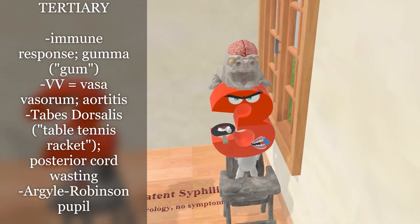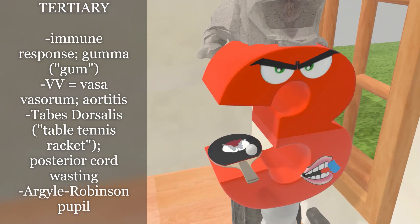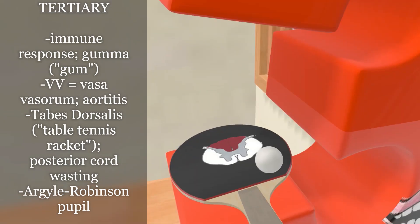In neurosyphilis, spirochetes occupy the back part of the spinal cord, resulting in tabes dorsalis — represented by the table tennis racket. The posterior part of the racket is shaded, reminding us of the wasting or loss of the back of the spinal cord, leading to loss of vibratory sense and proprioception. The spirochetes can also invade capillaries supplying the anterior spinal cord, resulting in general paresis or paralysis. In sensory ataxia, there will be Charcot joints — joint damage due to neurodegeneration — as well as a Romberg sign, the inability to maintain balance with eyes closed.